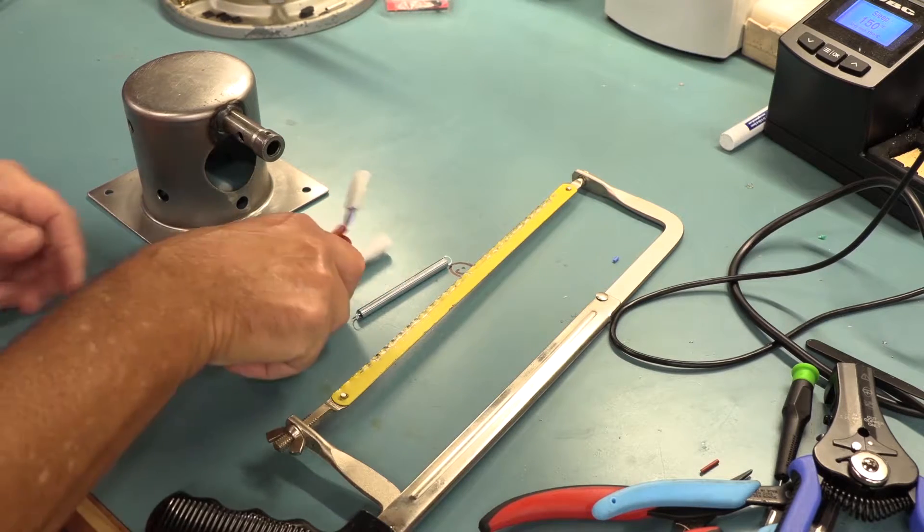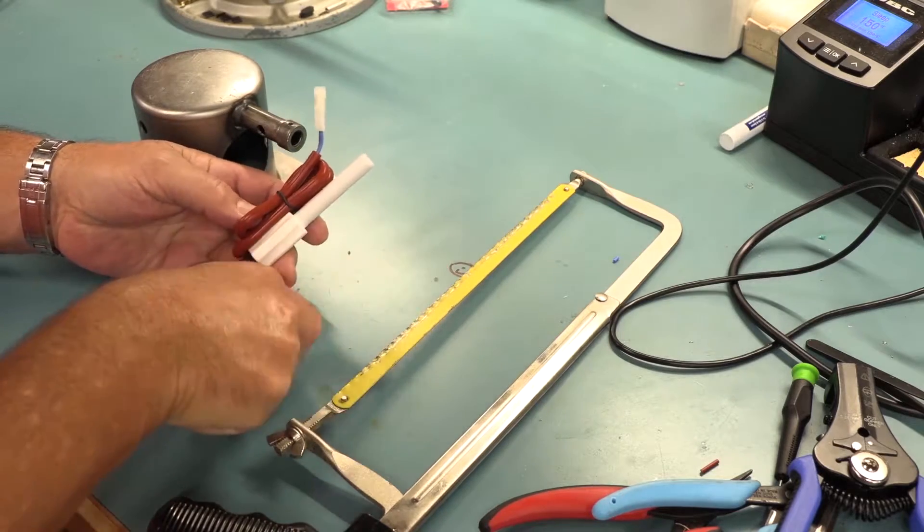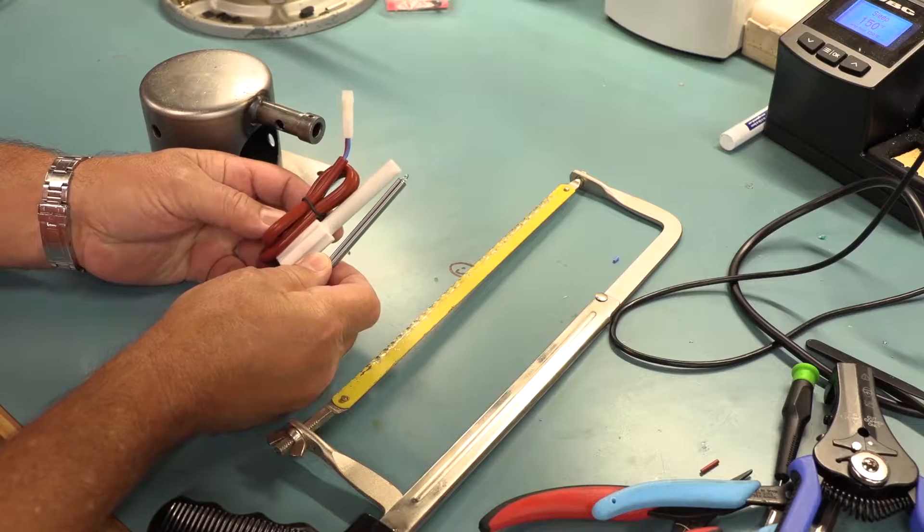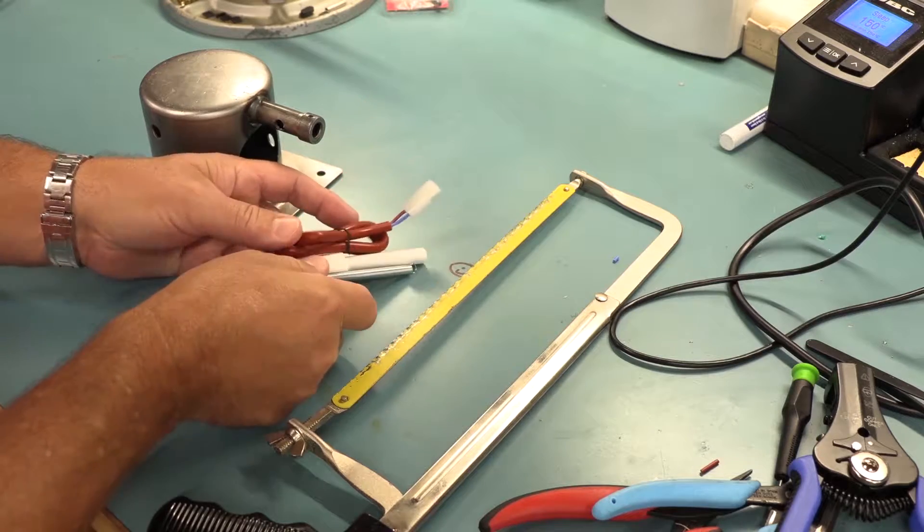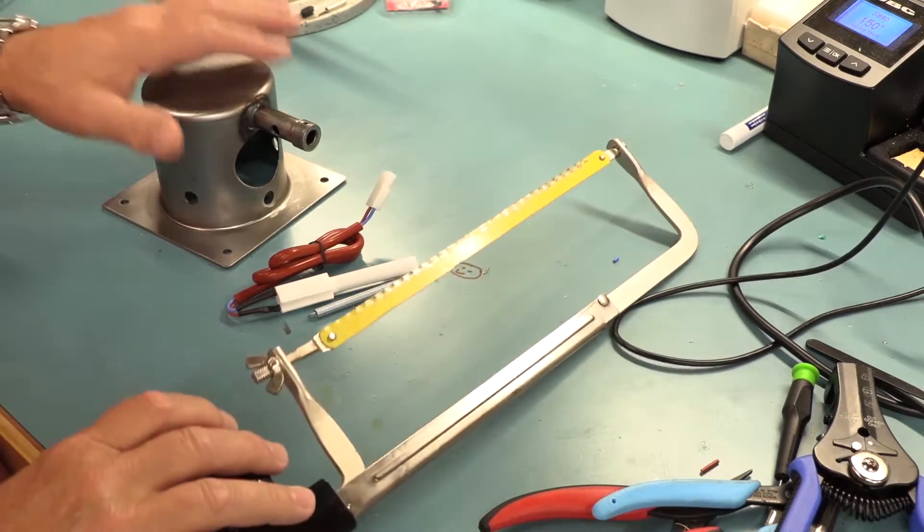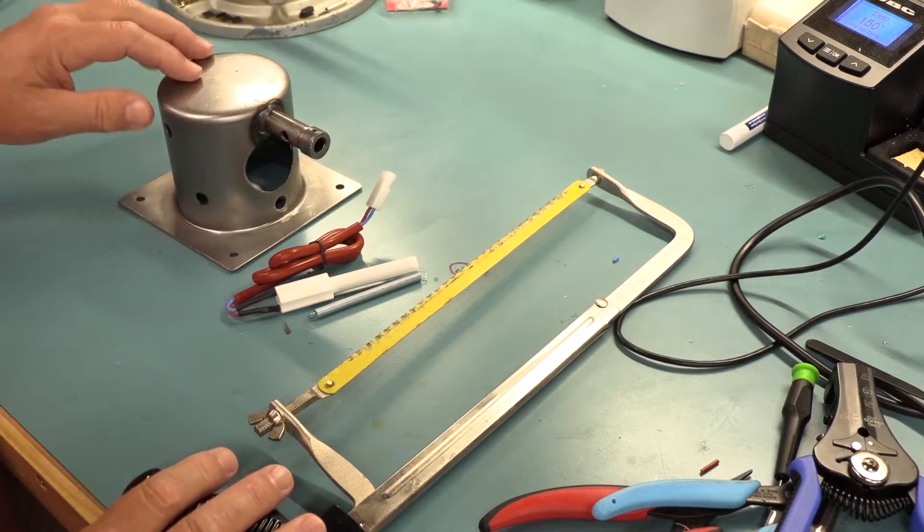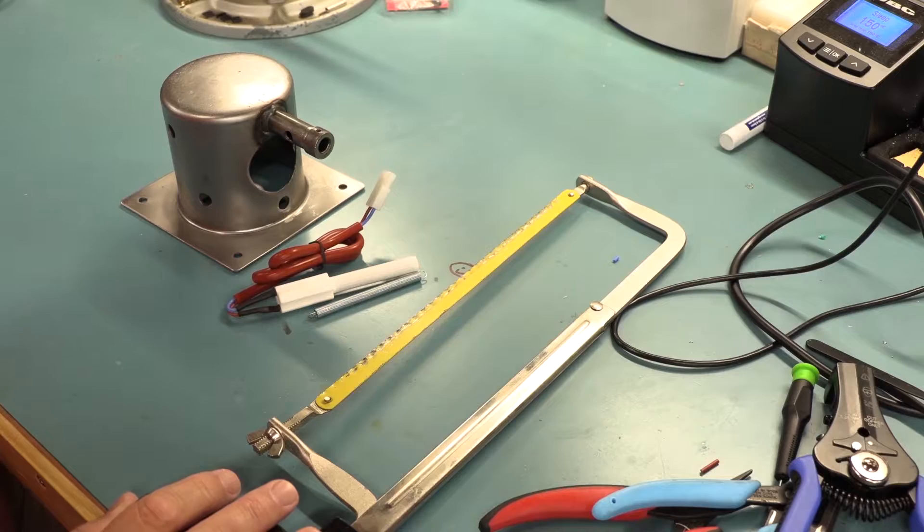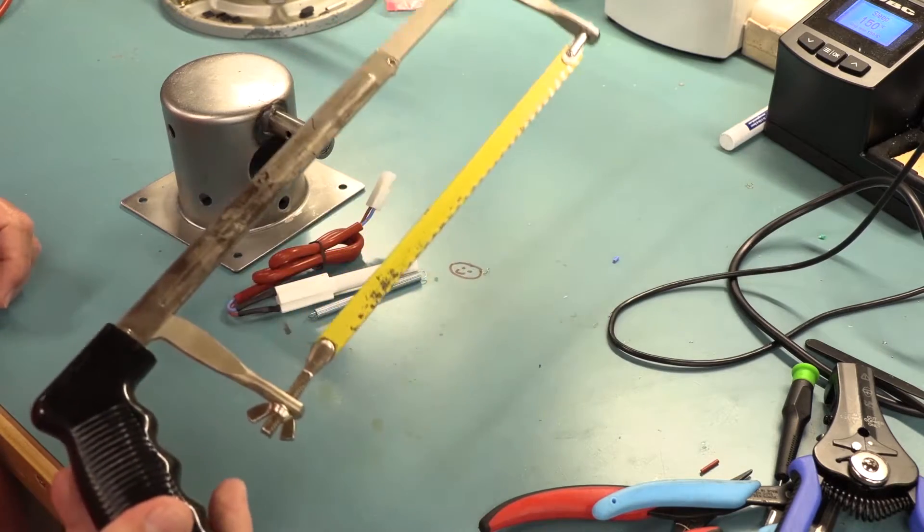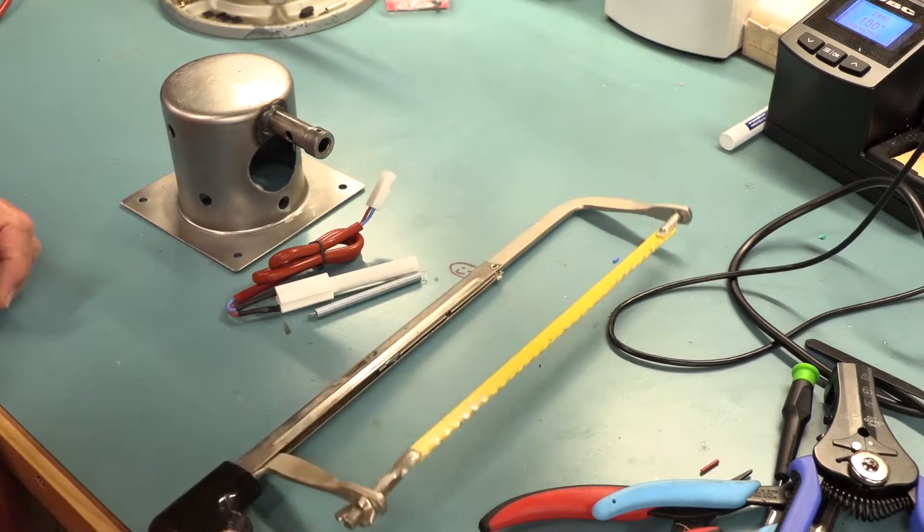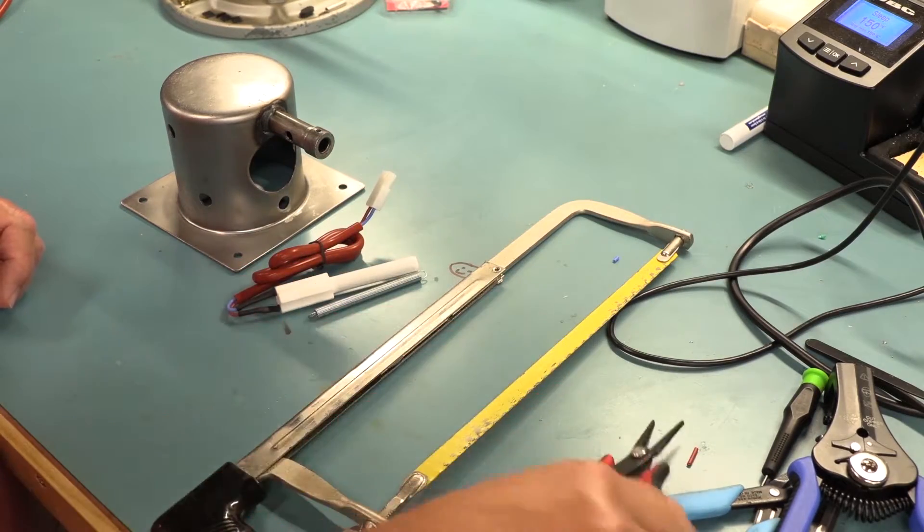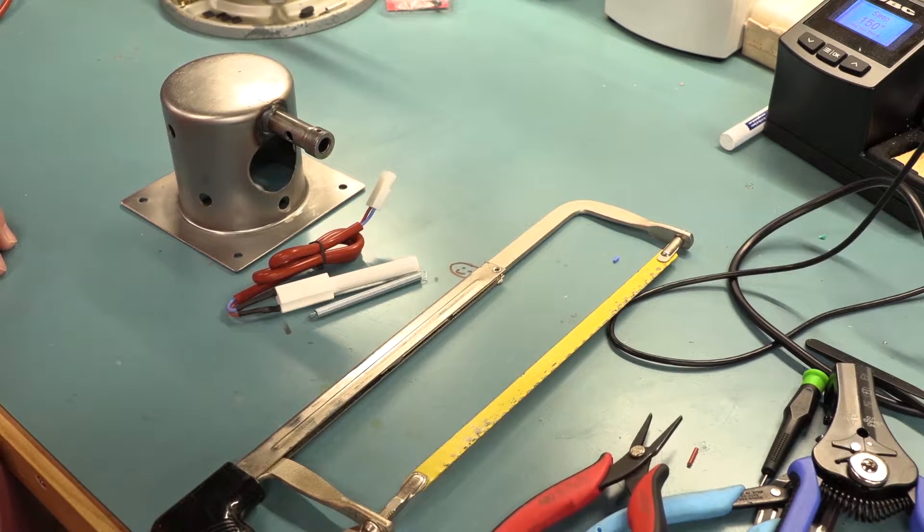The kit basically comes with a ceramic igniter and a spring. And so the only tool you need to do this, not including what it takes to remove the burn pot, that's another video. But the only tool you need for that is this guy right here, maybe some needle nose pliers for installing the spring. It can get a little tough without some pliers.